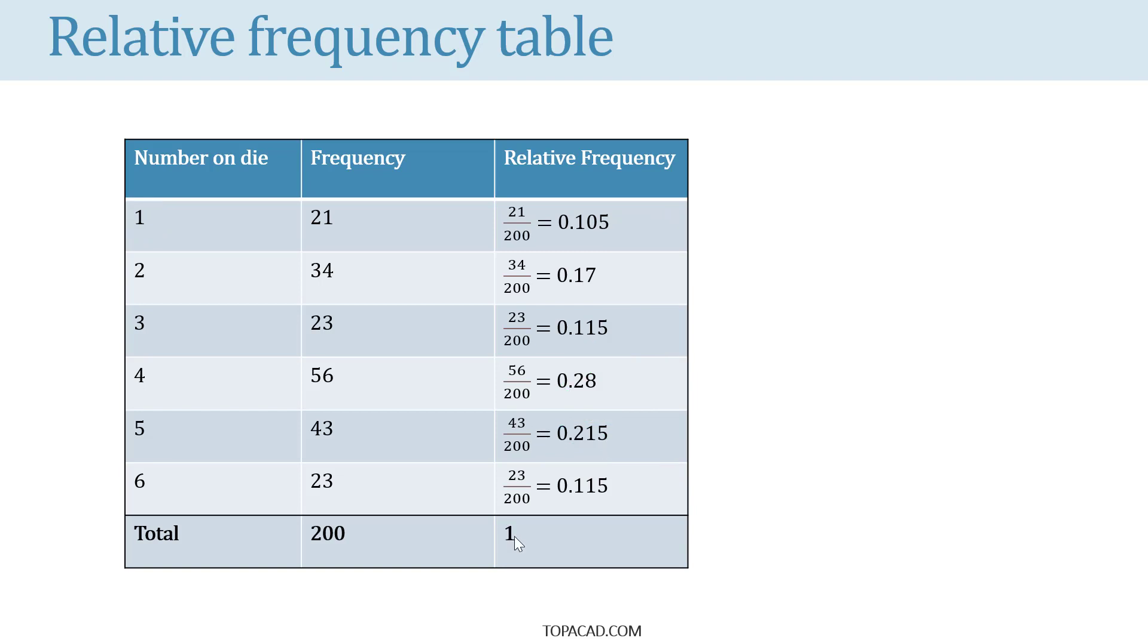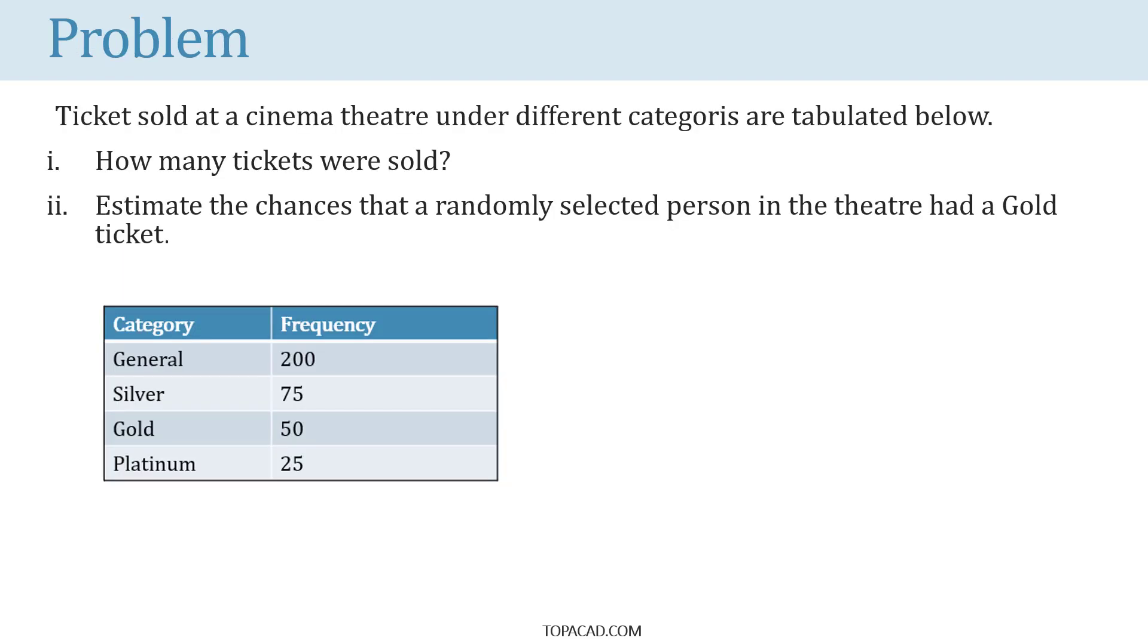Let's look at another problem. There were 200 general tickets sold, 75 silver tickets, 50 gold tickets and so on.